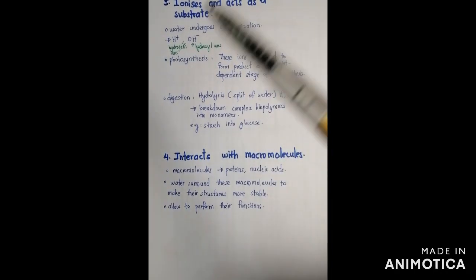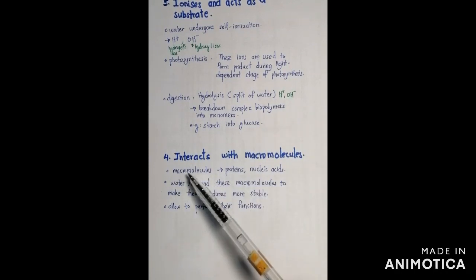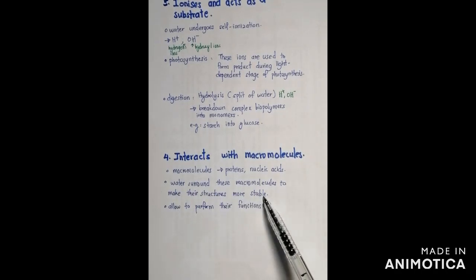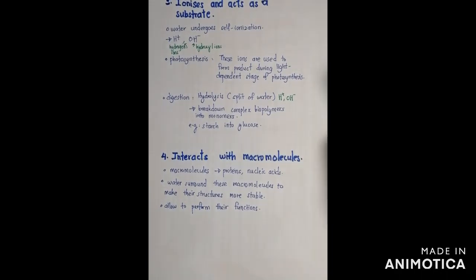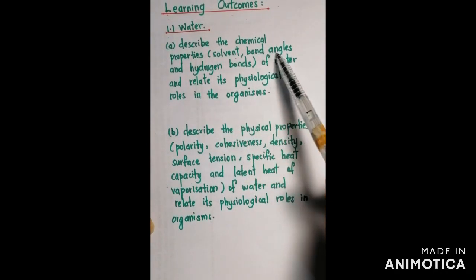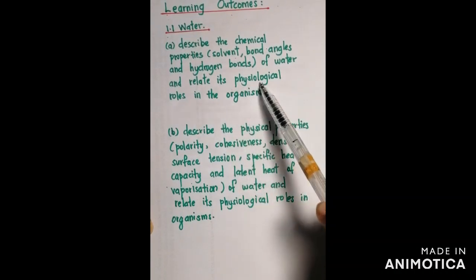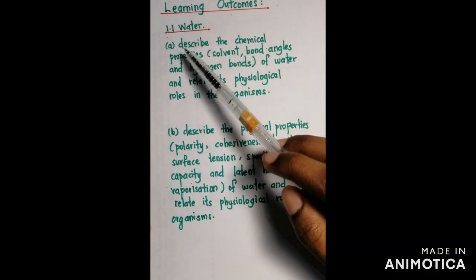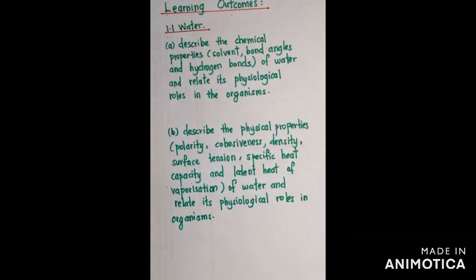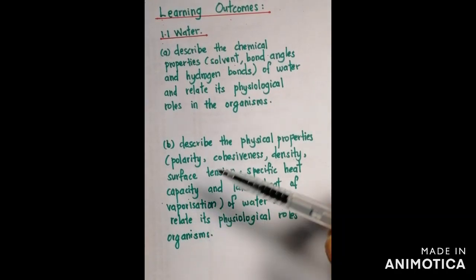Lastly, water interacts with macromolecules such as proteins and nucleic acids. Water surrounds these macromolecules to make their structure more stable and allows them to perform their functions. So now we have studied all the chemical properties of water: it is a solvent, has a bond angle of 104.5 degrees, and forms hydrogen bonds — and we have related these to physiological roles in organisms. In the next video, we will see the physical properties of water and relate them to physiological roles in organisms.